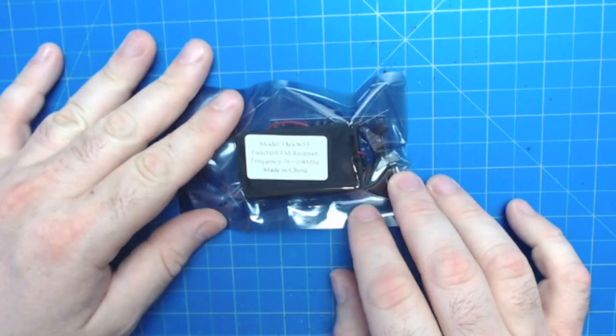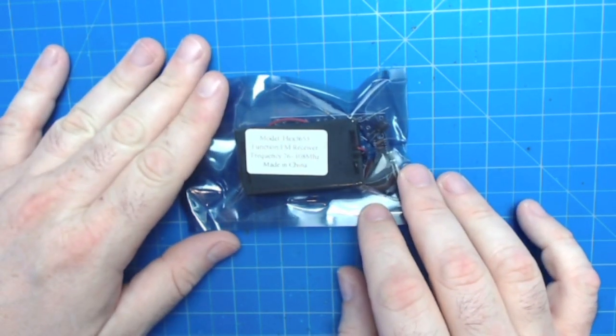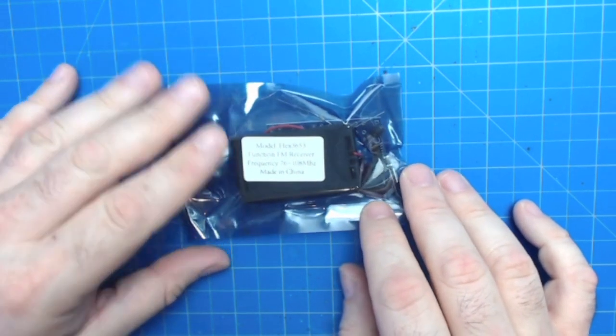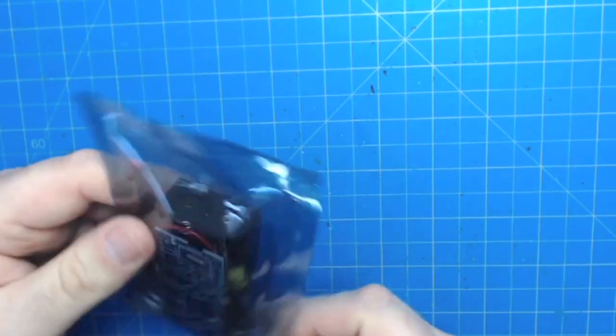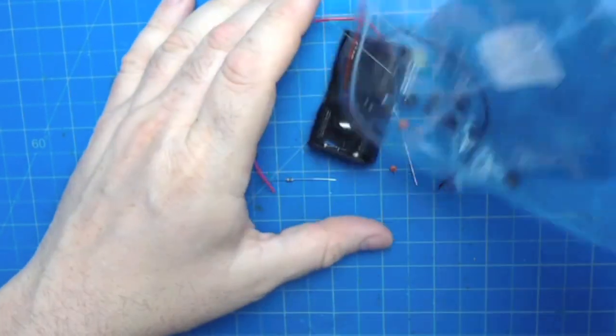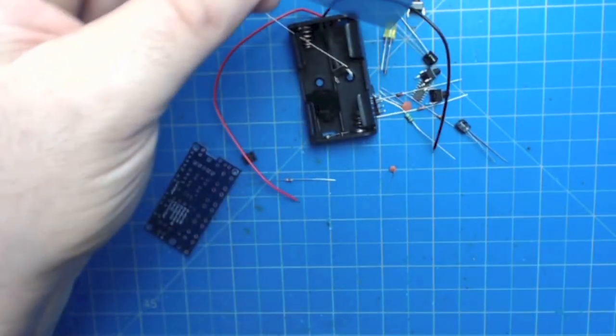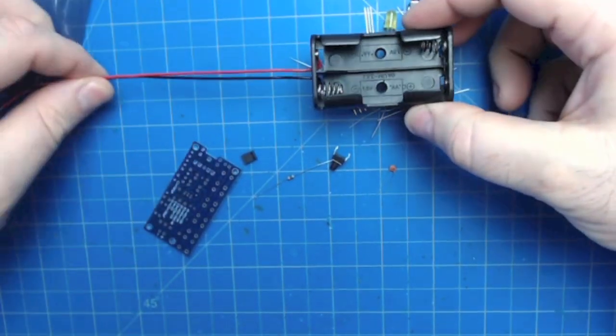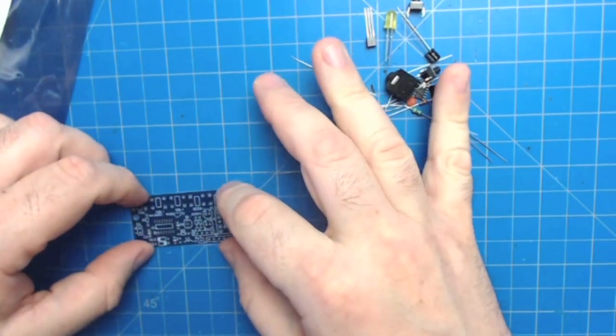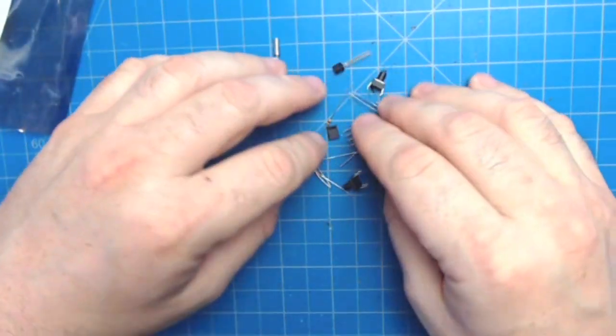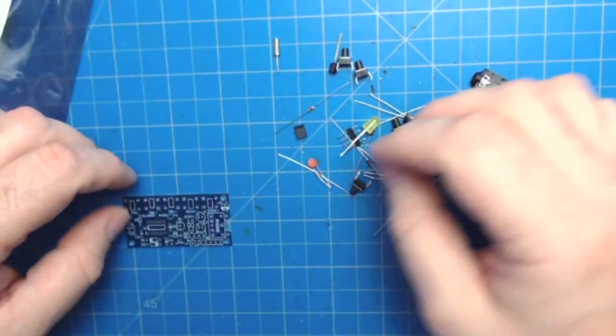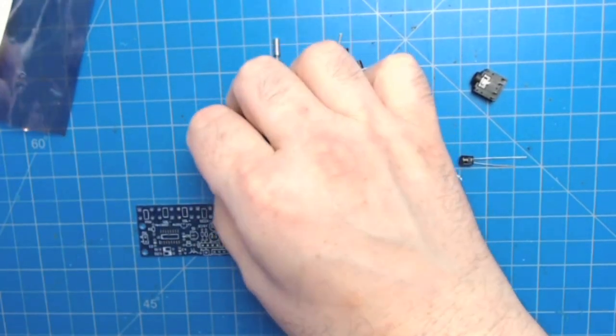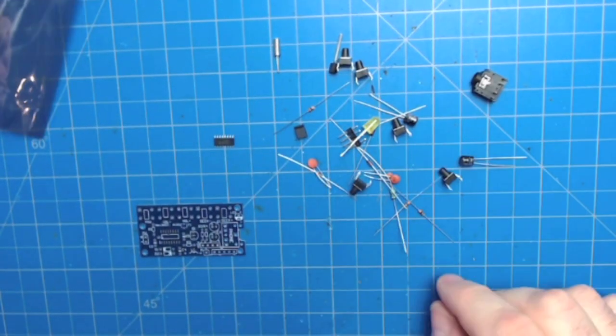It's an FM receiver. It can be tuned from 76 to 108 megahertz. It's based on a chip called the HEX3653, which is highly integrated. So you'll see there really isn't that much from a radio perspective to see what's going on in the kit. Let me open it up here. I'm going to dump it into this bag and we can lay it out.